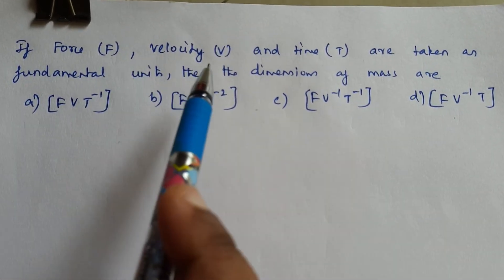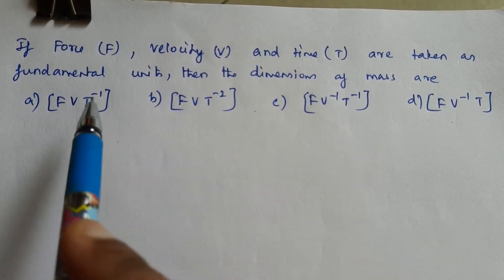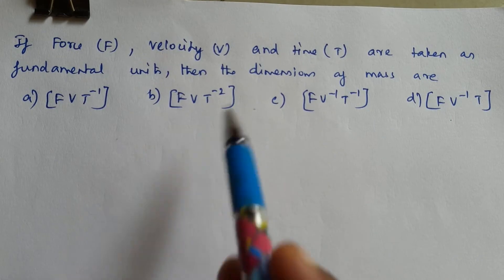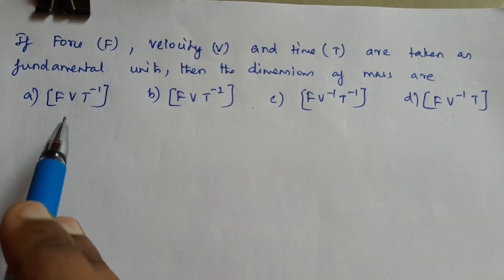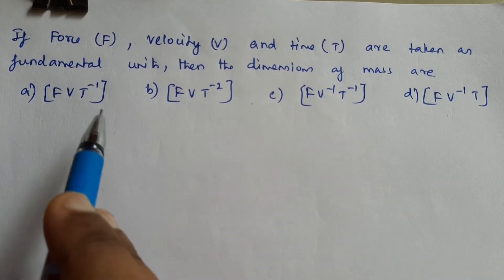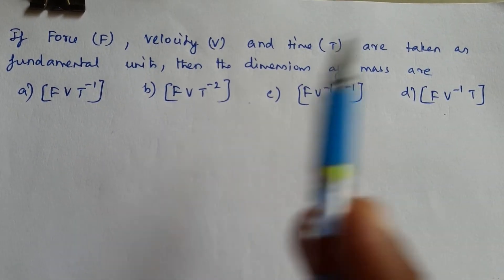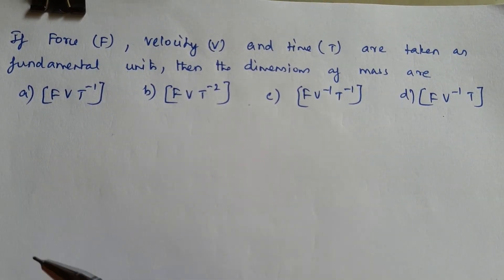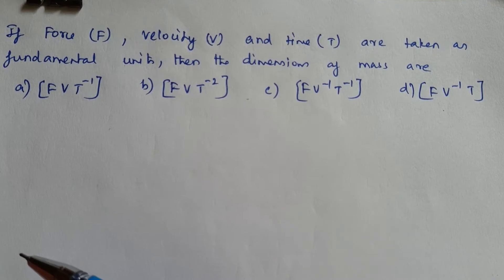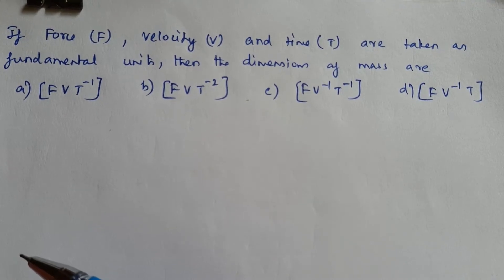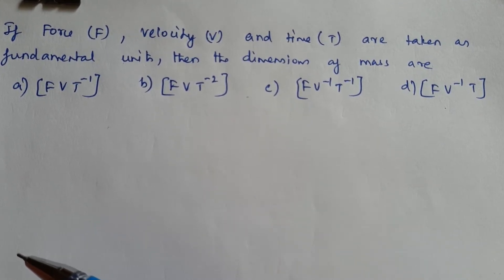If force F, velocity v, and time t are taken as fundamental units, then the dimensions of mass are: option A: F·v·t⁻¹, option B: F·v·t⁻², option C: F·v⁻¹·t⁻¹, option D: F·v⁻¹·t.